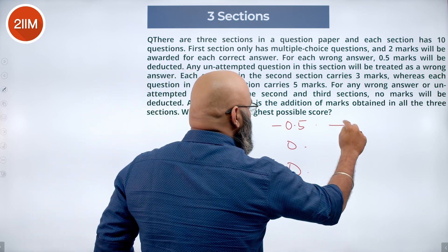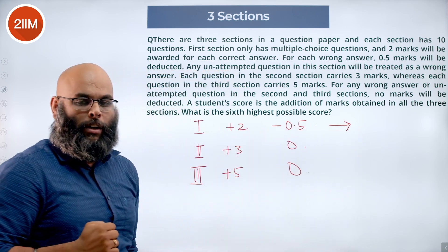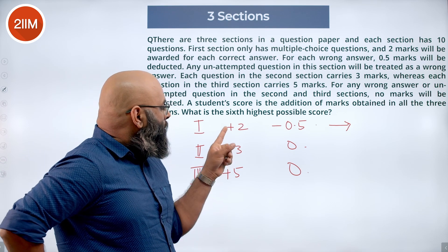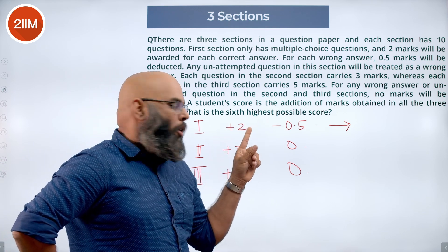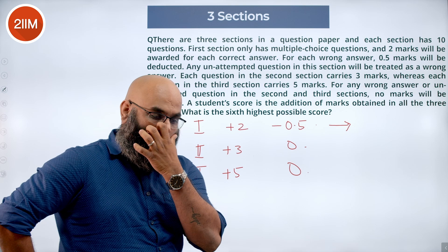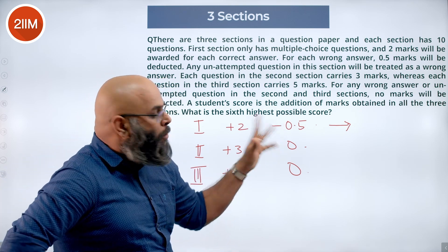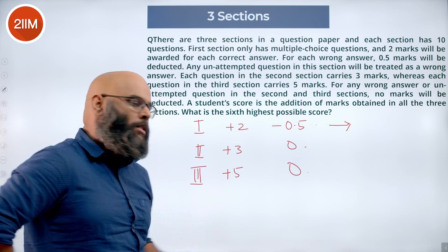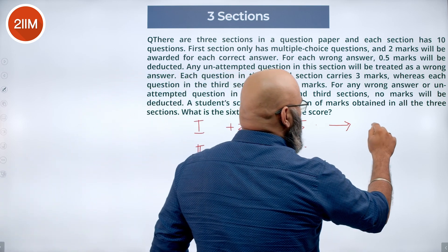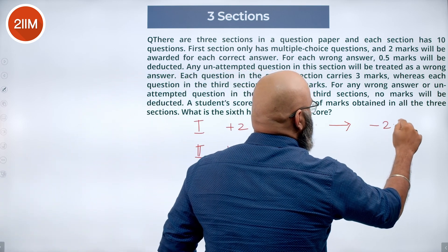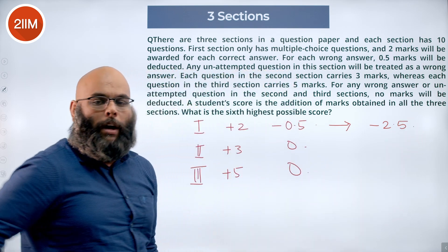Now if one question goes wrong in the first section, you are going to get minus 0.5 and you are also losing on these two marks. So you are not technically getting the two marks that you are supposed to get and you are losing out on 0.5 as negative marks. So if one question goes wrong or if you do not answer one question, you lose minus 2.5.